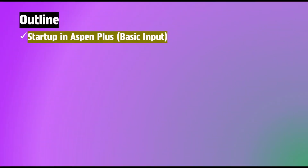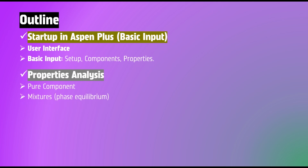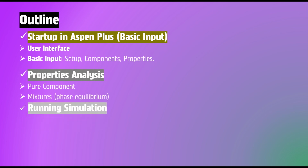At the end, here is the outline for Aspen Plus: startup in Aspen Plus with basic input — setup, components, properties — and property analysis with pure component, mixture, phase equilibrium, and running simulation with blocks, unit operations, and streams, flow rates, and finally results.